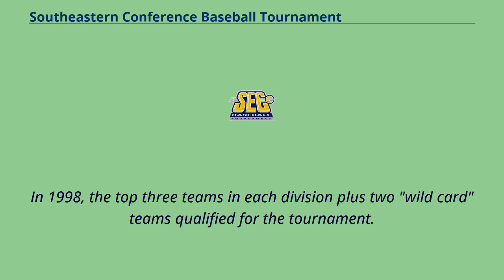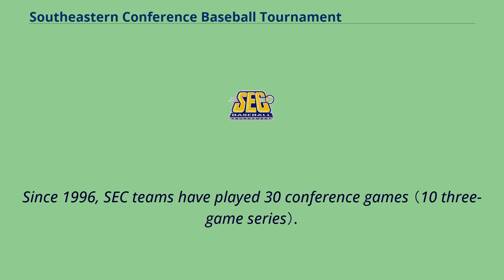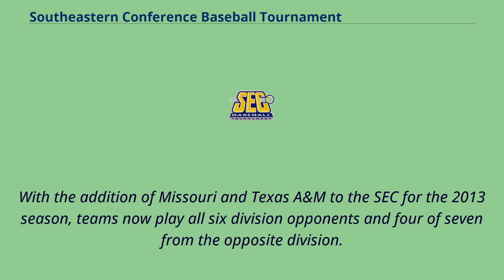In 1998, the top three teams in each division plus two wild-card teams qualified for the tournament. In 1999, the qualification standards were changed to the top two teams in each division plus the next four based upon overall conference winning percentage, which remained in place through 2011. Since 1996, SEC teams have played 30 conference games. From 1996 through 2012, each team played all five of its division opponents and five of six opponents from the opposite division. With the addition of Missouri and Texas A&M to the SEC for the 2013 season, teams now play all six division opponents and four of seven from the opposite division.